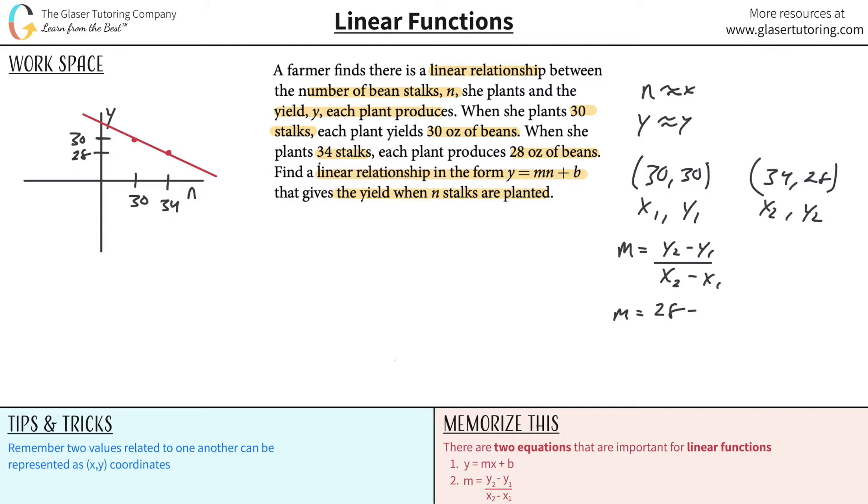So y2 is 28. y1 is going to be 30. x2 is going to be 34. And x1 is going to be 30. So doing some math, let's see what we get. It's going to be negative two, right? All divided now by four. So what does this work out to be? It works out to be simply negative one half. Oh, nice. So that is negative. That's what we expected it to be.